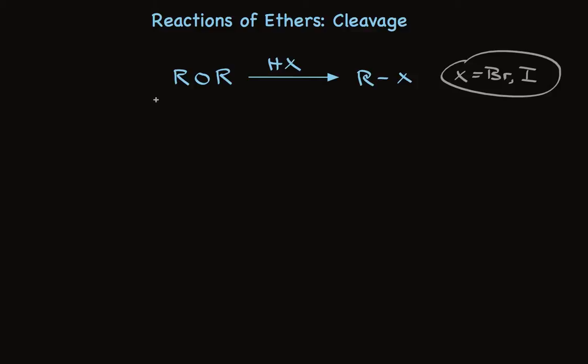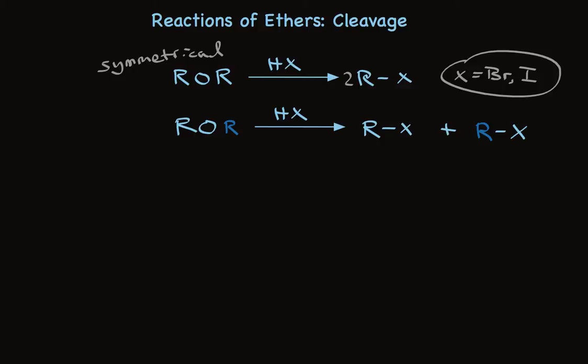Notice the word symmetrical here. When these R groups are identical, we actually make two moles. This same reaction occurs if the alkyl groups are not identical, but then we make a mixture of two alkyl halides, which is problematic for synthetic purposes. So typically, we'll use this for synthesis when we're starting with symmetrical ethers.